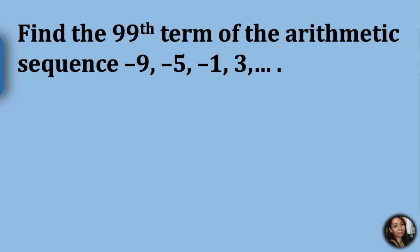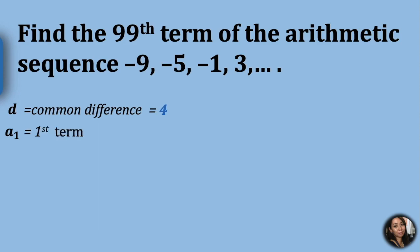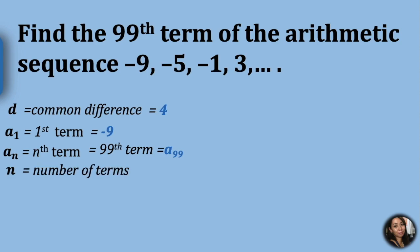Going back to the problem, solving for the 99th term of the sequence negative 9, negative 5, negative 1, 3, and so on. First, let's identify the given. Our d, common difference, is 4. Our first term is negative 9. a sub n is our nth term, which is a sub 99, and our a sub 99 is unknown. And for n, the number of terms, there will be 99 terms.